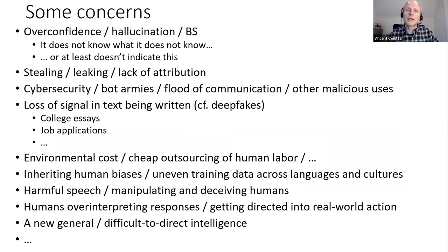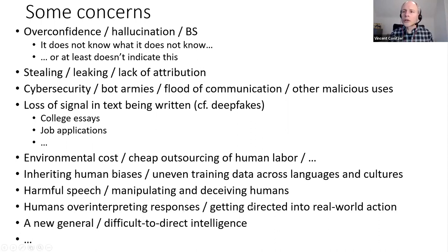I don't see this as the endpoint of this line of work — I imagine it will get quite a bit more impressive yet. And that should get us to think all the more about all these different concerns. It's rather remarkable how just one or two of these systems, like ChatGPT or Bing Chat, illustrates so many concerns that people in the AI ethics community have had, ranging all the way from near-term concerns to longer-term concerns about general intelligence. So let me end there, turn off the recording, and we can start the discussion.